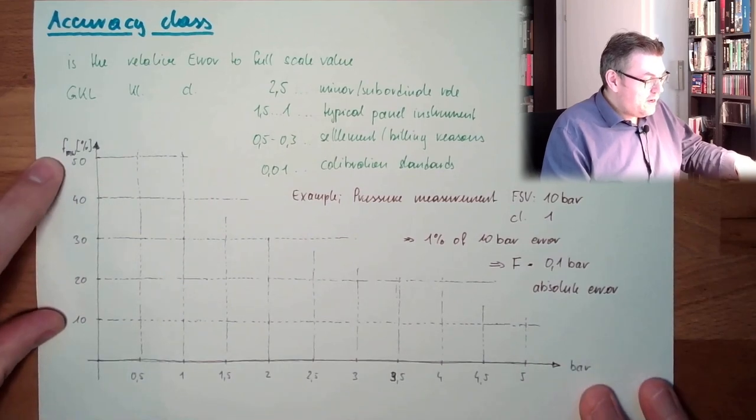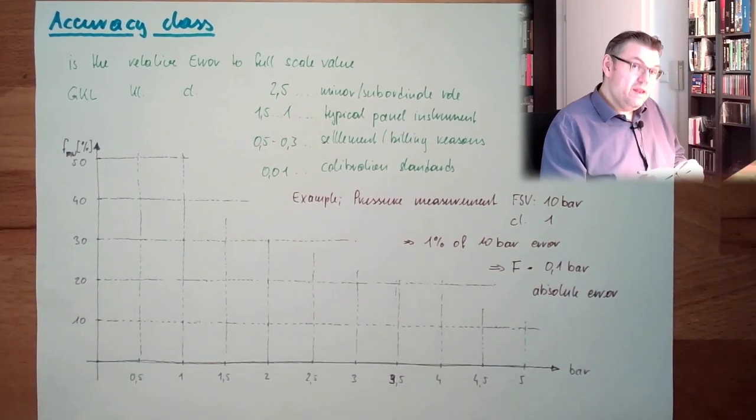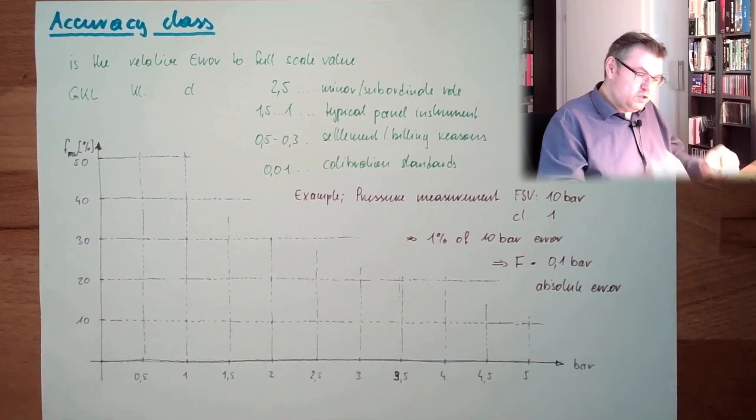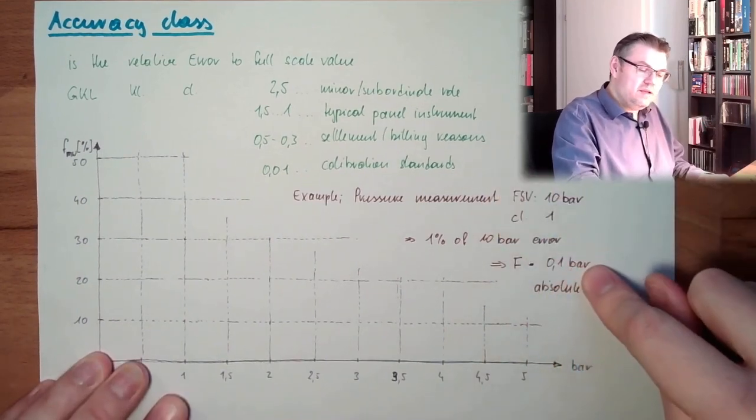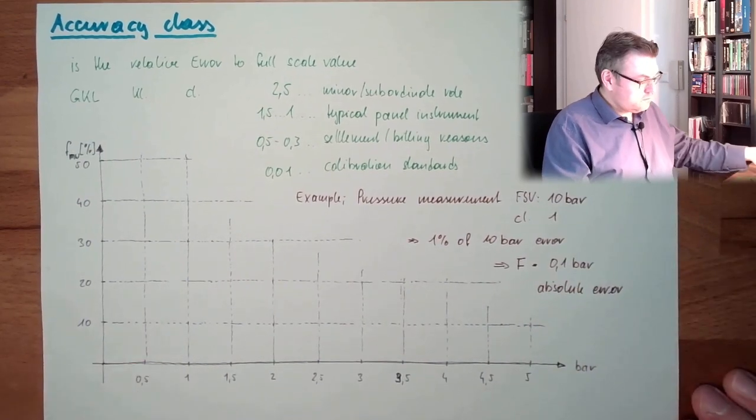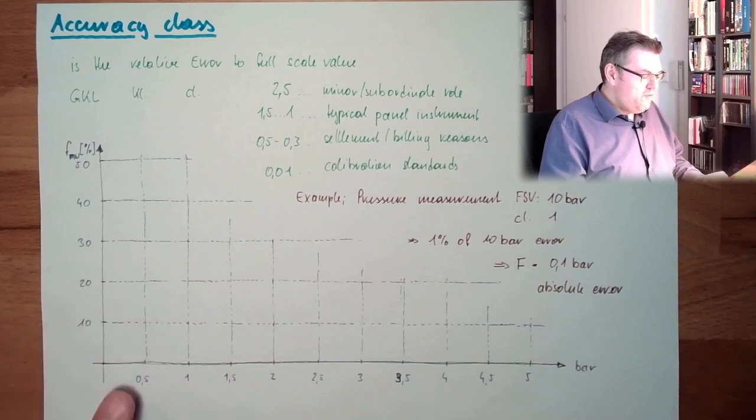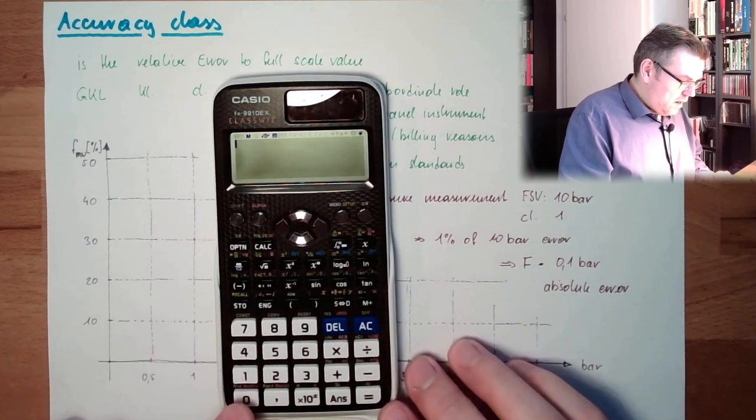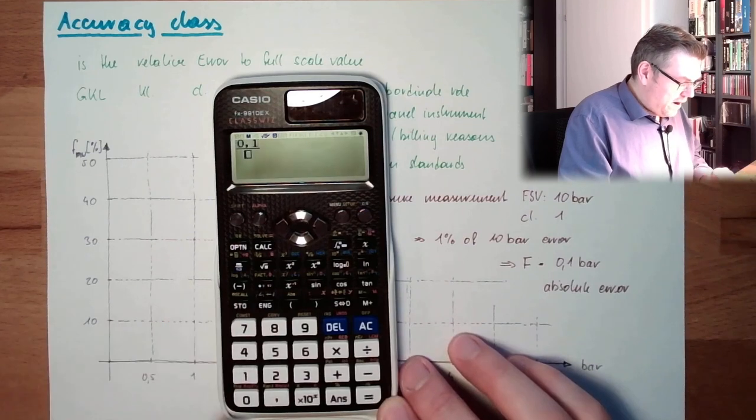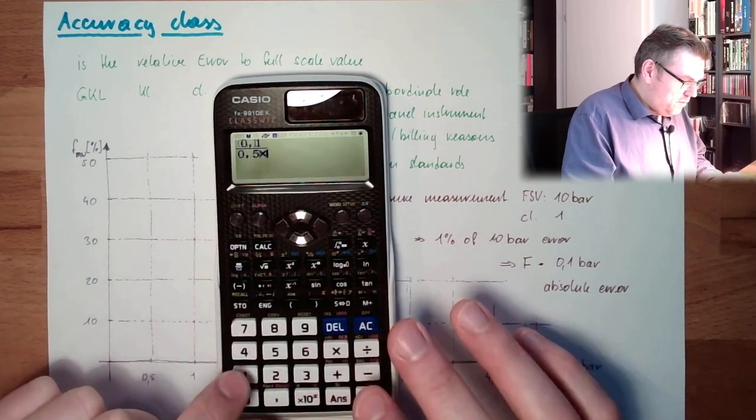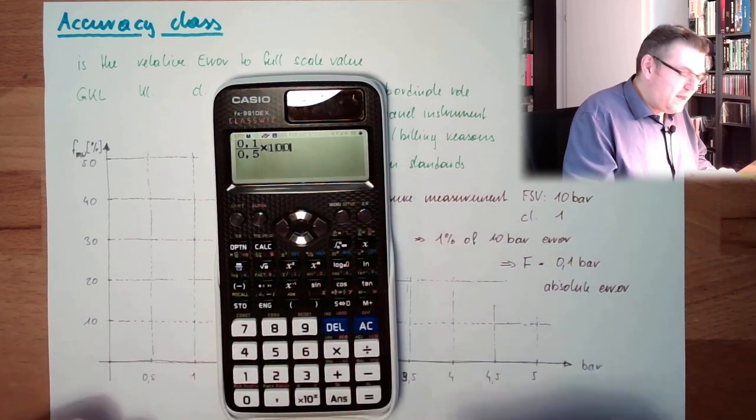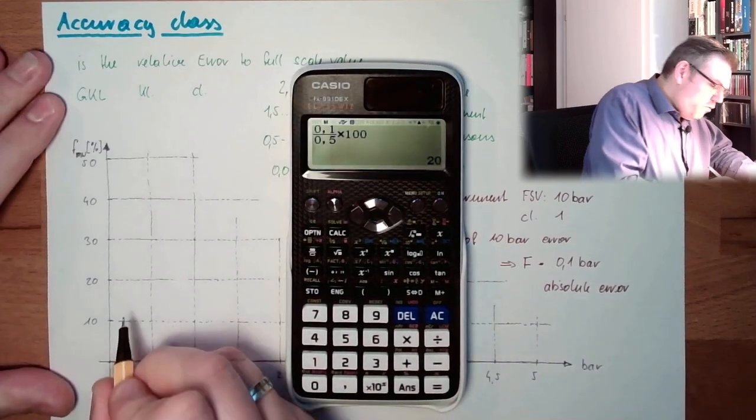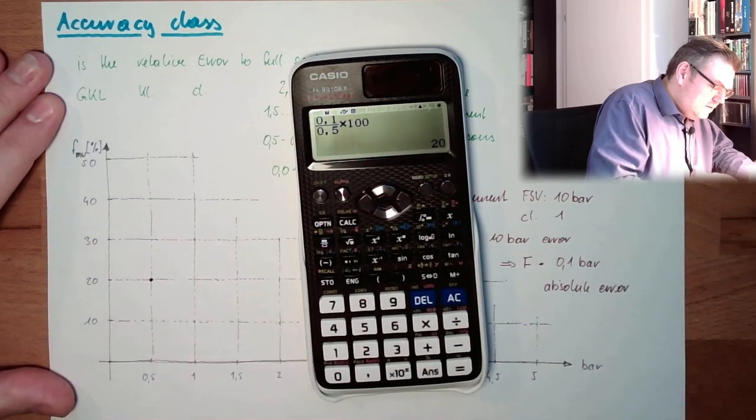So what is now the error we can expect compared to the measured value? Now we know this measurement device with these parameters, we would expect this error, this absolute error. Now, let's see how many percent we have at 0.5 bar. So at 0.5 bar, I make 0.1 bar error, and divide it by 0.5 bar, multiply it by 100 to get it in percent - equals 20%. So here at 0.5 bar, we make an error of 20%.